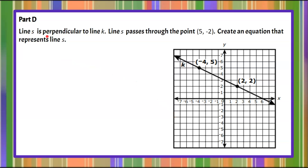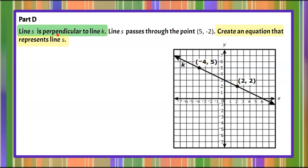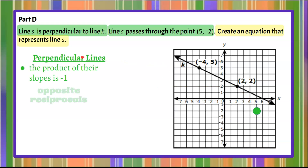Moving on to part d. We're told that line s is perpendicular to line k, and line s passes through the point (5, -2). You're asked to create an equation that represents line s. We've plotted the point (5, -2). For two lines to be perpendicular in the coordinate plane, the product of their slopes must be negative 1. We call this opposite reciprocals in math.